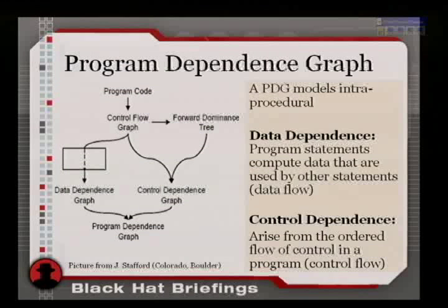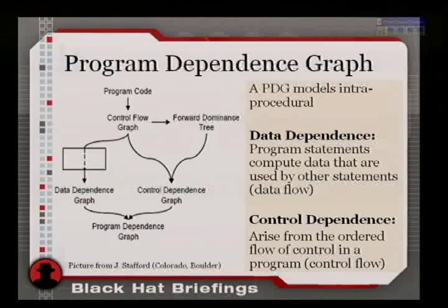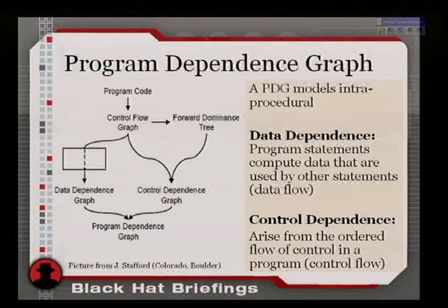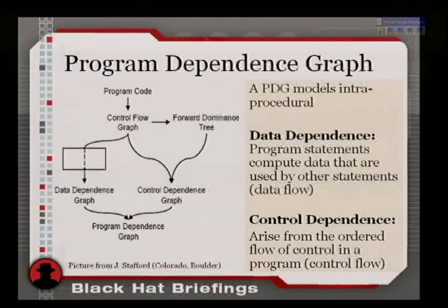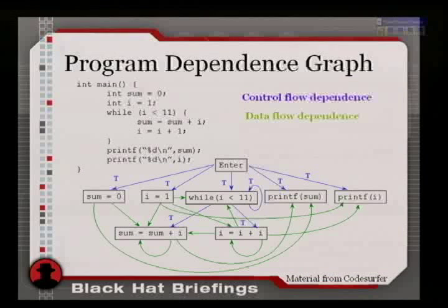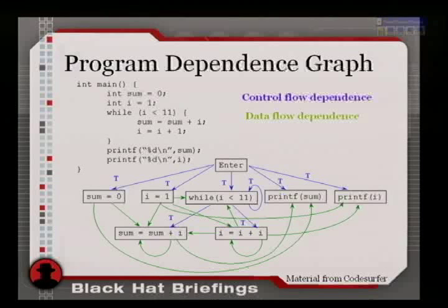In order to do this, one needs to know a little about representing programs as graphs — here's the whirlwind tour. You've all probably used the control flow graph in IDA. What we first have is a program dependence graph, which includes data dependencies and control flow dependencies — an augmented control flow graph. This graphical tool, code surfer, serves as illustration.